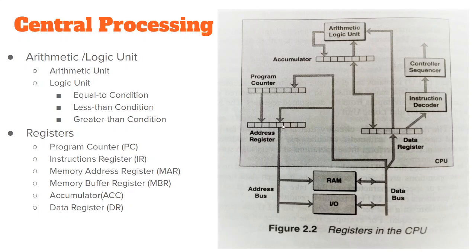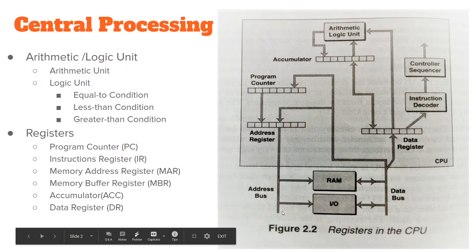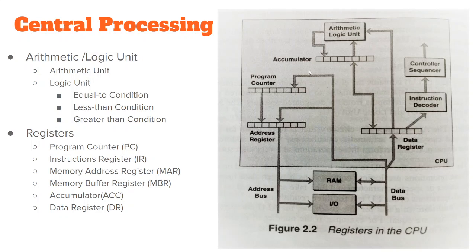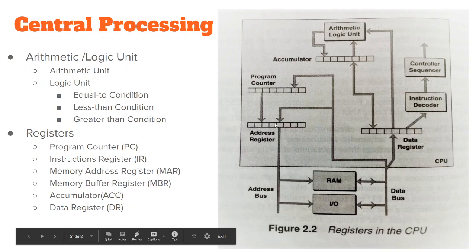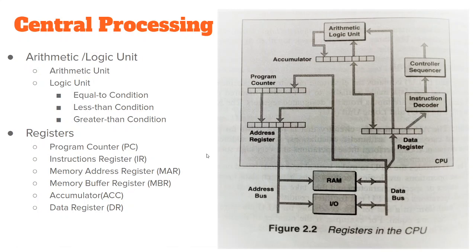Regarding the address: it goes to the address register, indicating where the data is located. The address can sometimes be retrieved from the system as well. The program counter checks which instruction is being correctly performed. Once processing is done, the result is sent to the output device via the address register — whatever is to be displayed is shown on the output device. This is how the registers work together.